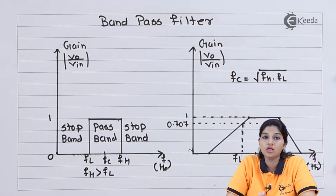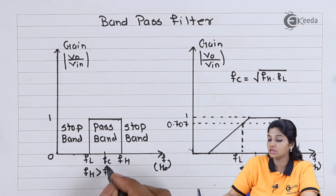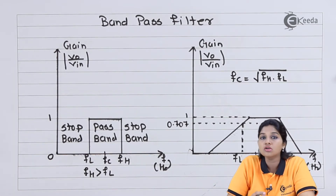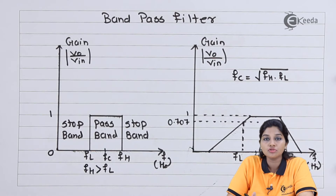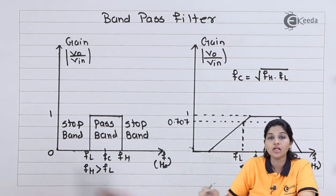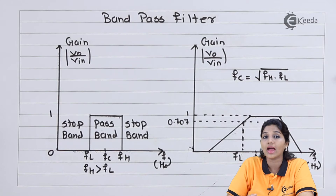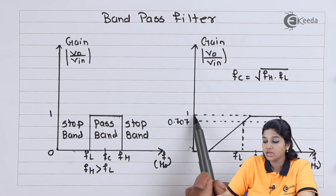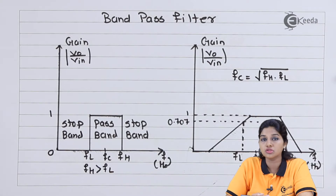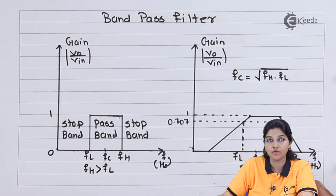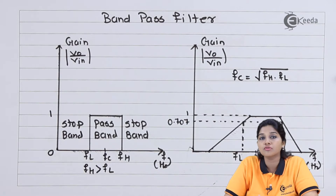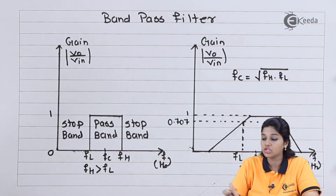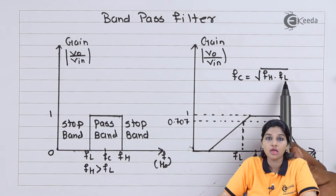In between fh and fl, we will have a middle frequency that is fc, which is called the center frequency or cutoff frequency. If we look at the practical response, fh and fl are the values of frequency considered at the minus 3 dB frequency. So when gain equals 1, after reducing to 0.707, we get the fh and fl values. This value of frequency provides the pass band, and the center frequency is the middle frequency between fh and fl, given by the relation fc equals square root of fh times fl.